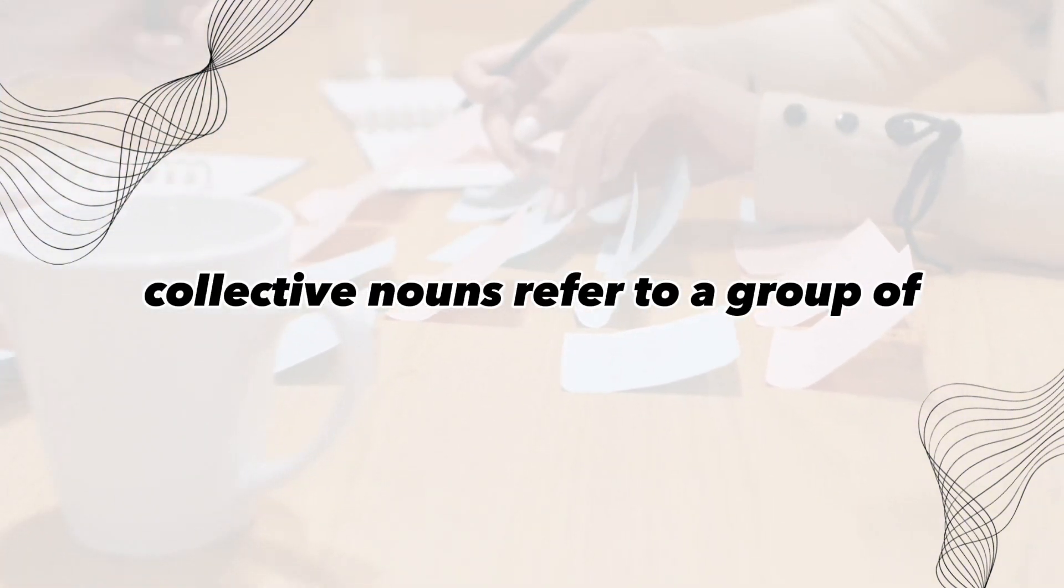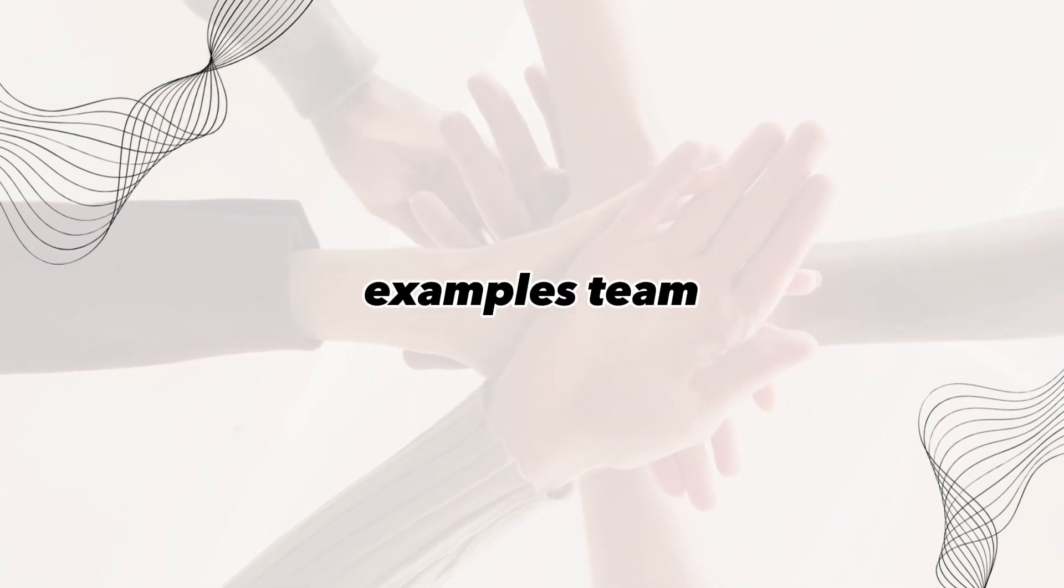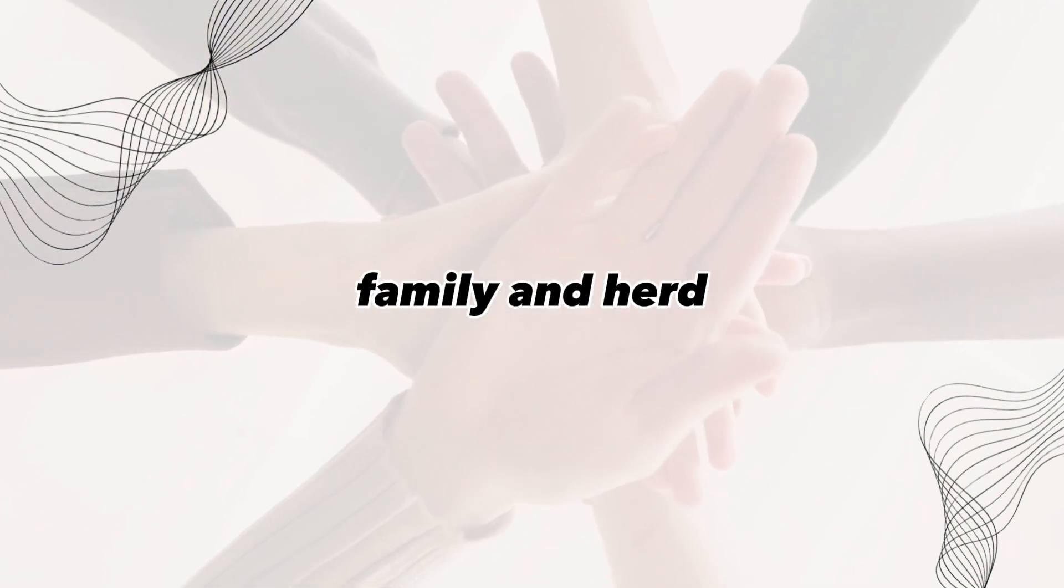Collective noun. Collective nouns refer to a group of objects or people treated as a single unit. Examples: team, family, and herd.